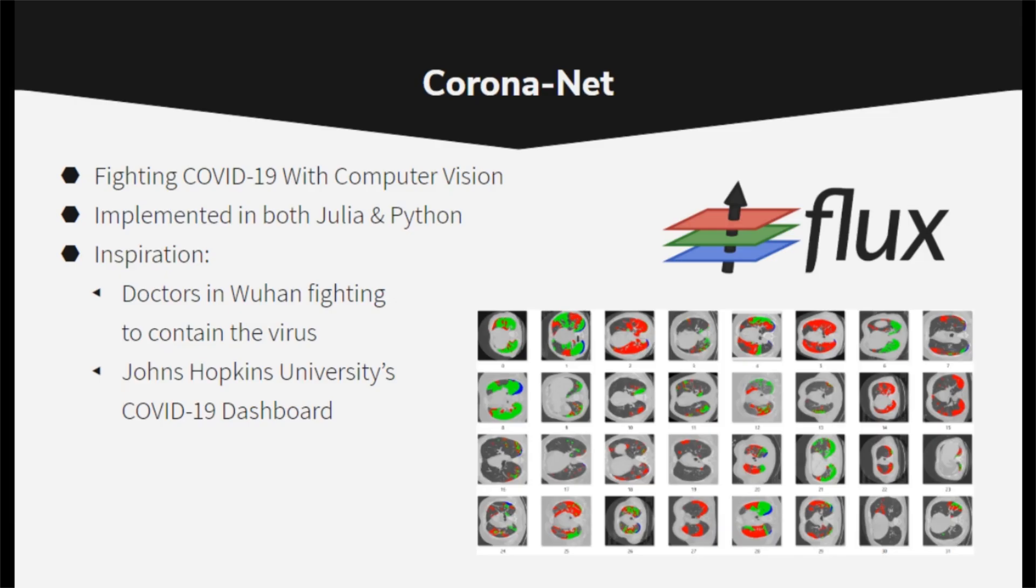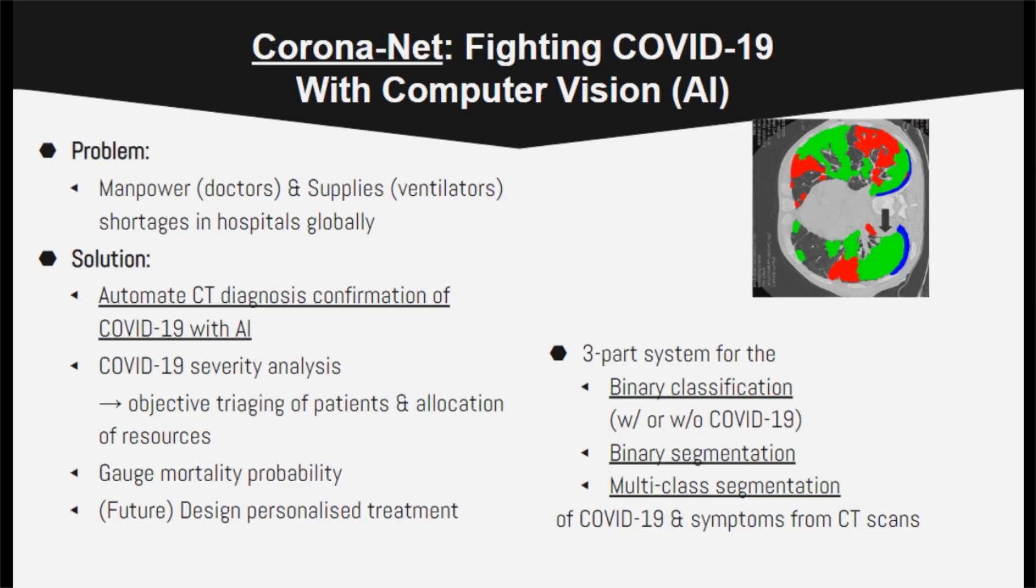Coronanet was started in early March, inspired by doctors in Wuhan who were fighting so hard to contain the virus. Coronanet is a three-part system for the binary classification, binary segmentation, and multi-class segmentation of COVID-19.